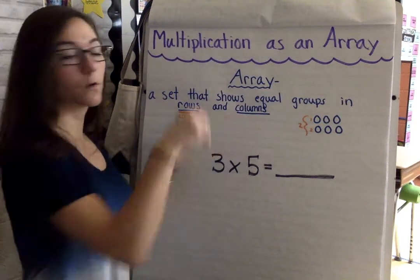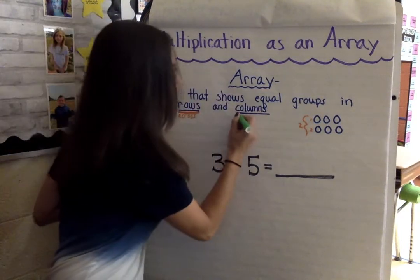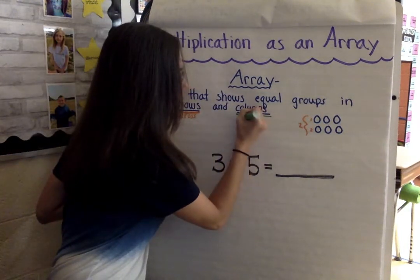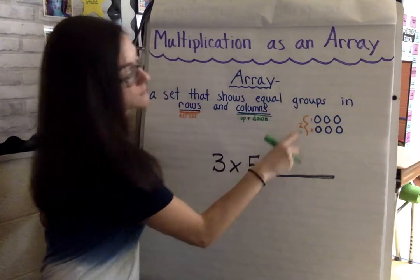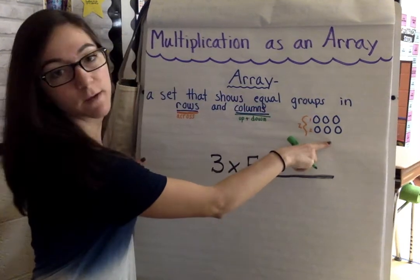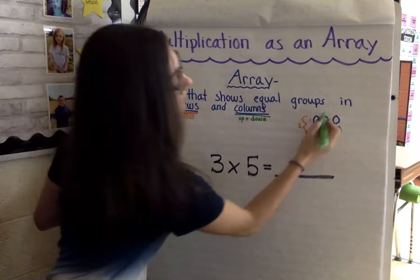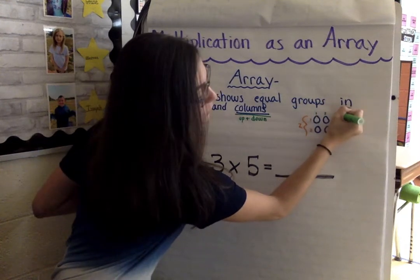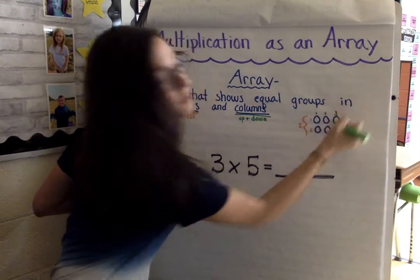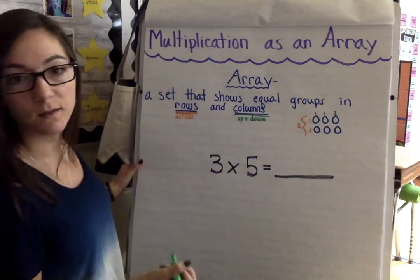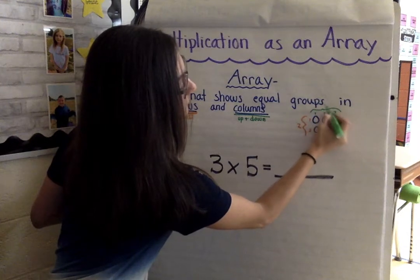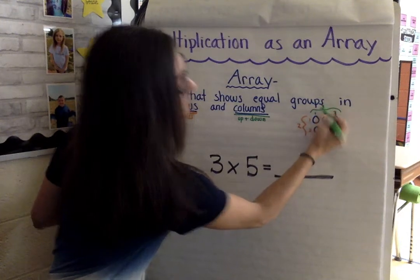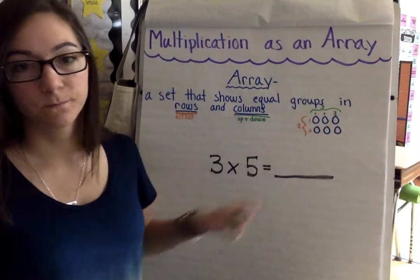Columns go up and down. So this array example over here has one, two, three columns. So we have three columns going up and down.